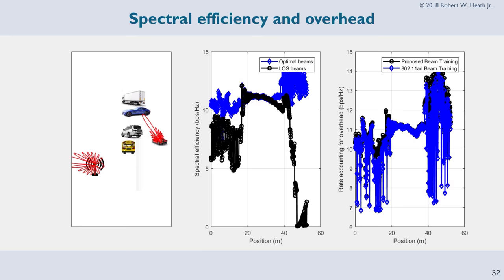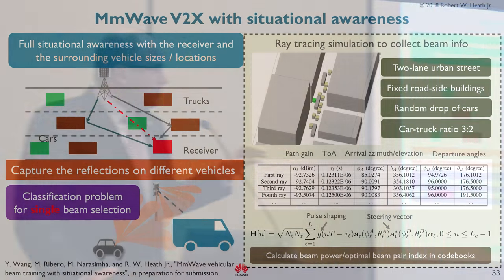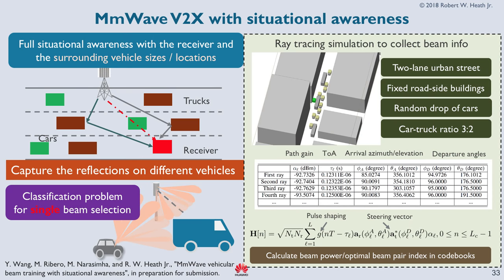The last few minutes I'll tell you about what we've been doing most recently. That initial work was based on a concept we called inverse fingerprinting. In the most recent work, we took a slightly different approach: suppose the base station knows where all the vehicles are and thus has a good idea of potential blockages. Instead of just knowing the receiver and trying lots of beams, we have a good idea of which beams may be blocked, so we can try just one or a few with high probability. We developed a simulator using ray tracing, using Wireless InSite, with cars dropped according to typical traffic distributions with a certain fraction of cars and trucks.